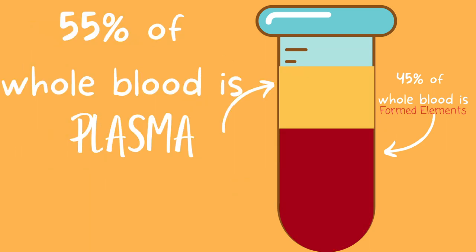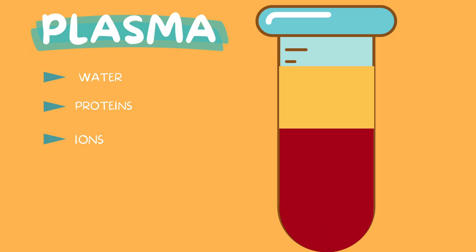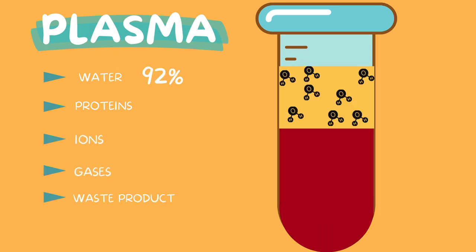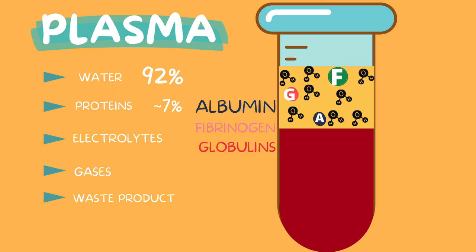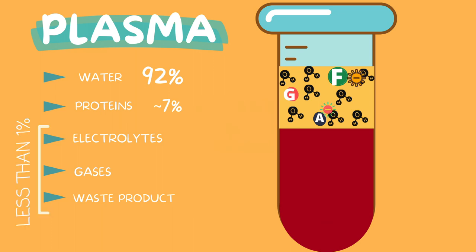55% of the blood is plasma — everything that is not the formed elements. Plasma consists of water, proteins, ions, gases, and waste products. 92% of the plasma is water. About 7% is proteins, and this includes albumin, fibrinogen, and globulins. The remaining less than 1% consists of ions, gases, and waste products.